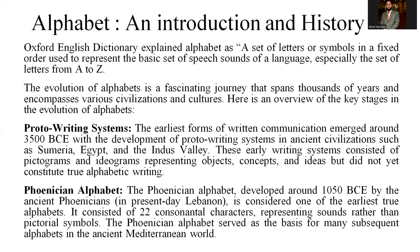The Phoenician alphabet was developed around 1050 BC by the ancient Phoenicians in present-day Lebanon. It is considered one of the earliest true alphabets, consisting of 22 consonantal characters representing sounds rather than pictographic symbols.